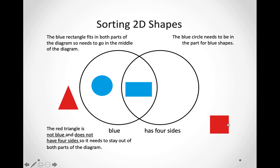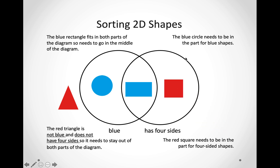And let us look at the square over here. Is it blue? No, it is not — it is red. Does it have four sides? Let us count: one, two, three, four. Yes, it does. So, we are going to put it in the part that says four sides. And that is how we have sorted out our shapes.